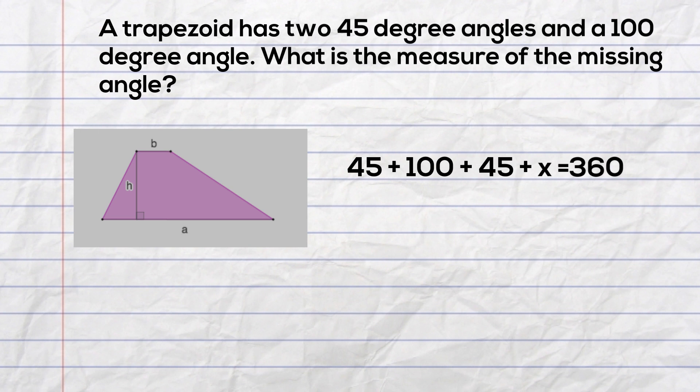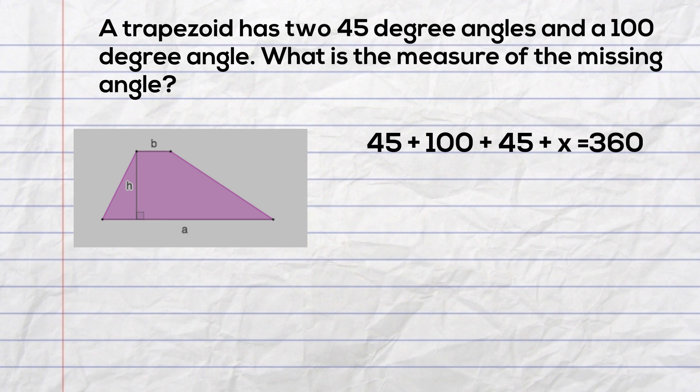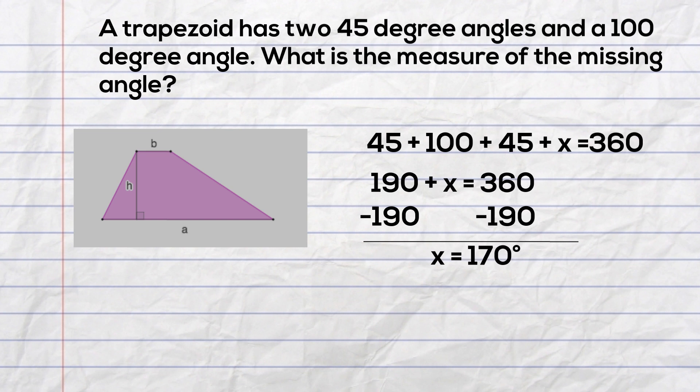Now I'll solve the equation. I will first combine like terms, so 45 plus 100 plus 45 is 190. Then I will get variables to the left of the equal sign and numbers to the right. To get x by itself, I will subtract 190 from both sides. When I bring down the numbers, that gives me x equals 170 degrees.